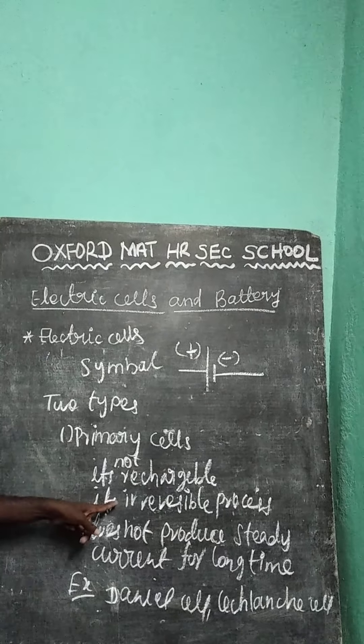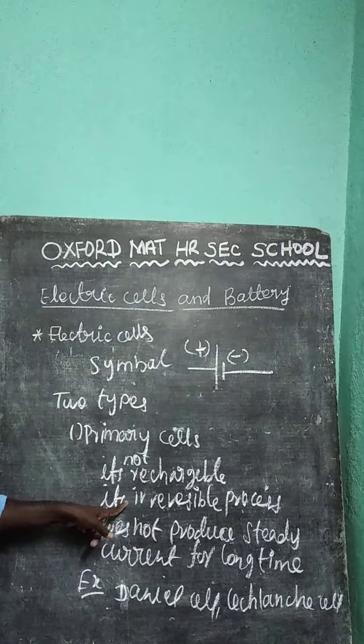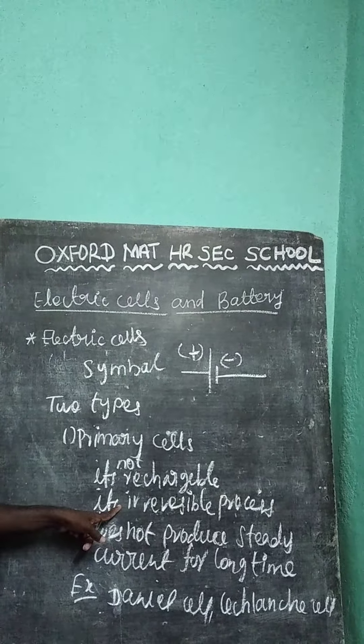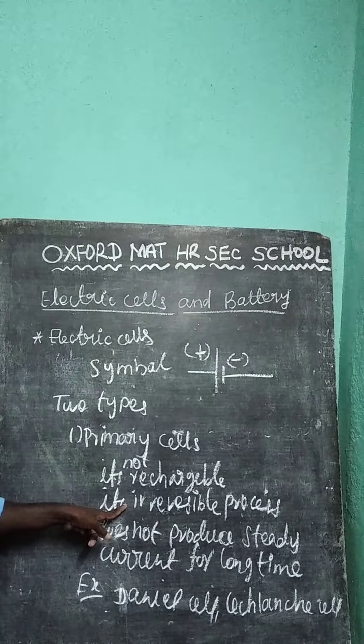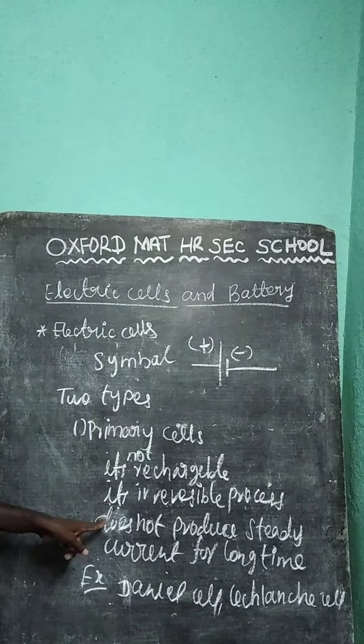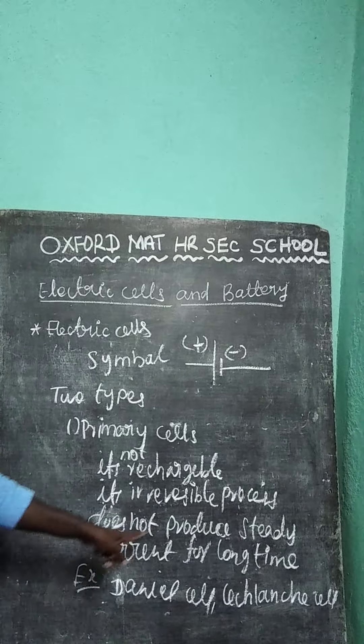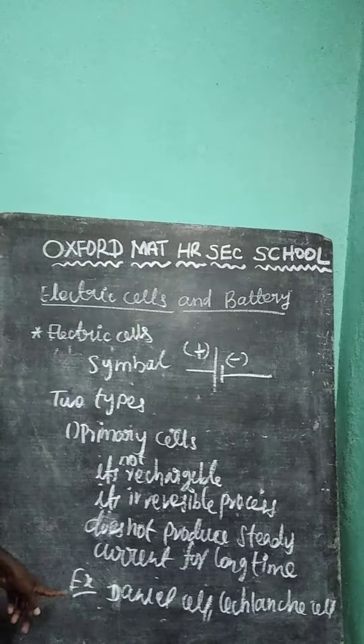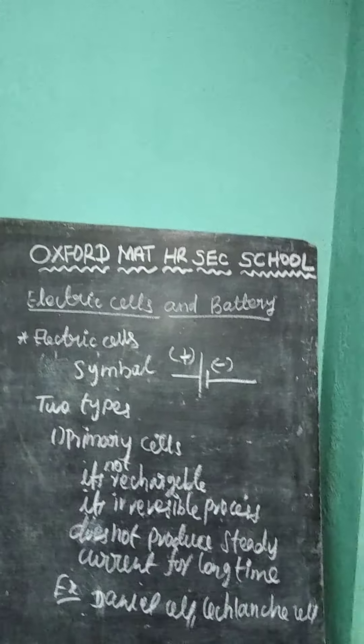It is irreversible process. Irreversible process means it does not come back to original position. Once charge power lost means lost. Again, we can't be able to store again. Then, it does not produce steady current for long time. For example, Daniel cell and Leclanché cell.